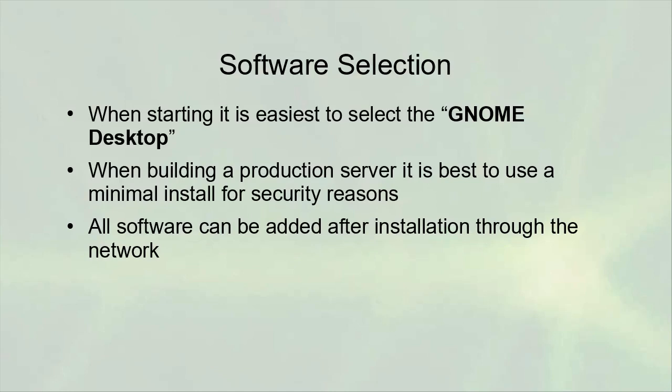Software selection — you want to make sure you select which software needs to be installed. When you're starting out, the easiest thing to do is to select the GNOME desktop, which will give you all the essentials and a GUI. However, Linux was designed mostly to be run without a GUI. In a production environment, you want to start with a minimal install and just add the features you need, because having too much software introduces security issues. Any software you missed during installation can be added afterward, as long as it's not something critical like network drivers.